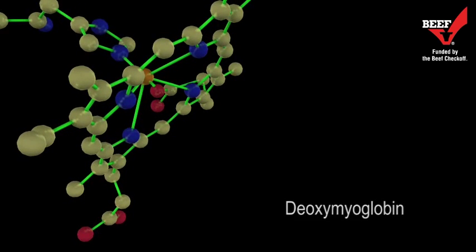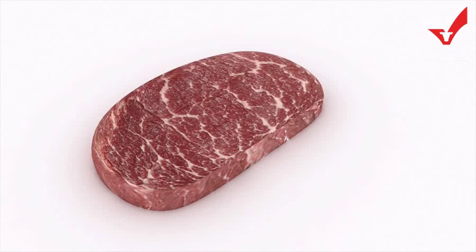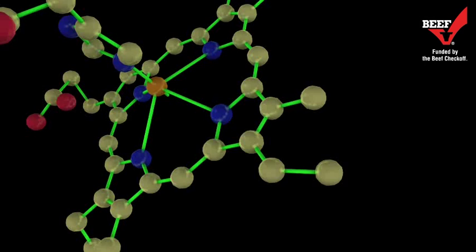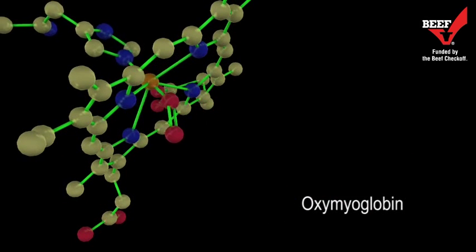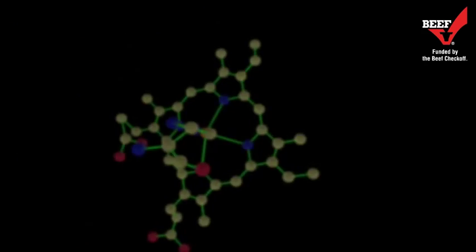When deoxymyoglobin is exposed to oxygen via cutting, unsealing, or grinding, the result is the most desirable bright cherry-red beef lean color. In oxymyoglobin, iron remains in the ferrous state but is allowed to form a bond with oxygen in a process known as oxygenation.